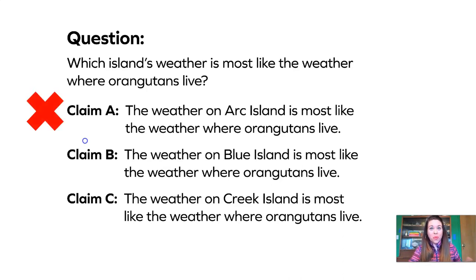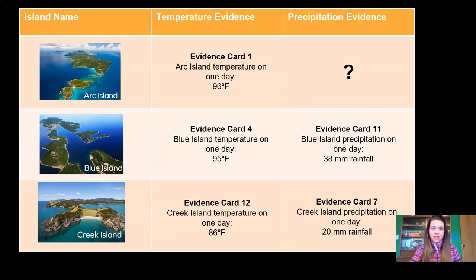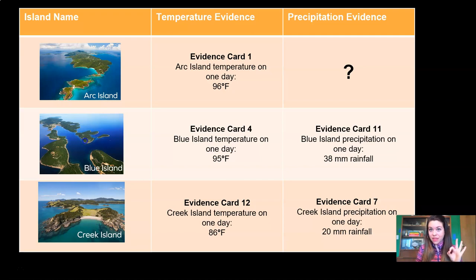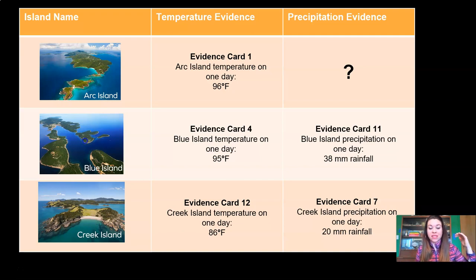No, we don't. We have temperature data, but we don't have any precipitation data, so we can't possibly support Claim A. Looking back at our data table, we can compare Blue Island and Creek Island. Blue Island had a really hot temperature of 95 degrees compared to Creek Island's temperature of 86 degrees, so Blue Island was the hottest of those two. For precipitation, Blue Island had 38 millimeters of rainfall and Creek Island only had 20 millimeters. So Blue Island was the hottest and the rainiest of the islands that we had data for.